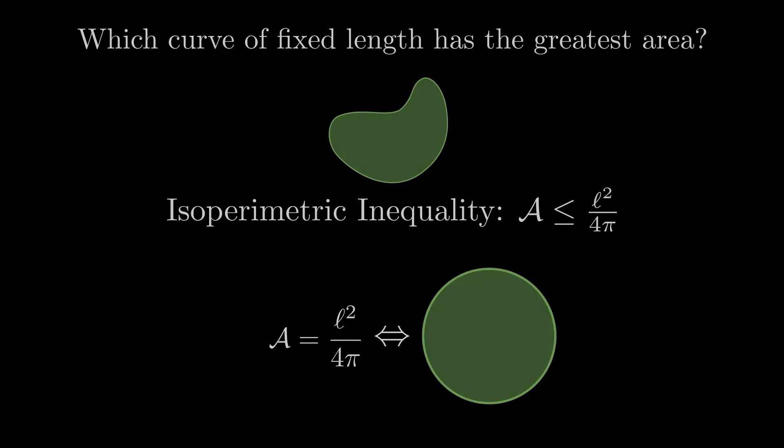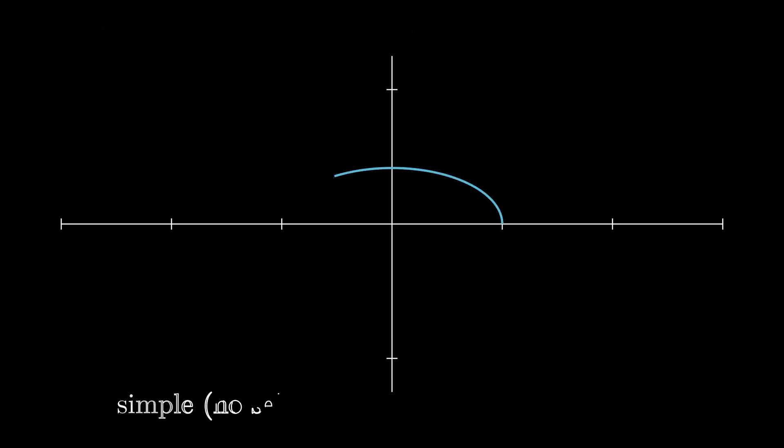Let's now formalize this. The curves we consider should be simple, so they have no self intersections, and be closed, meaning they start and end at the same point.